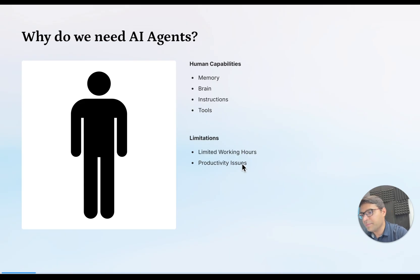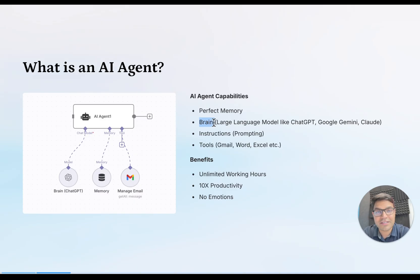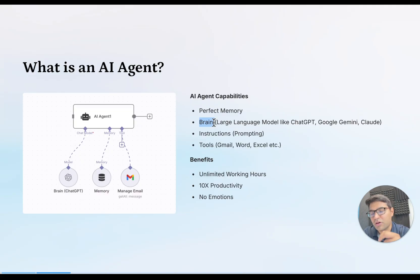That's when they built AI agents. An AI agent has everything a human has. We have provided memory and a brain to an AI agent, just like humans. The brain for an AI agent can be any large language model — for example, ChatGPT from OpenAI, Google Gemini, or Claude from Anthropic. Any large language model acts as a brain for an AI agent.